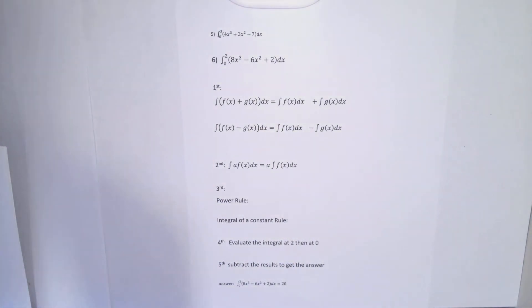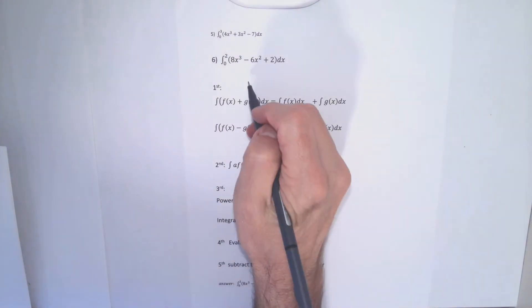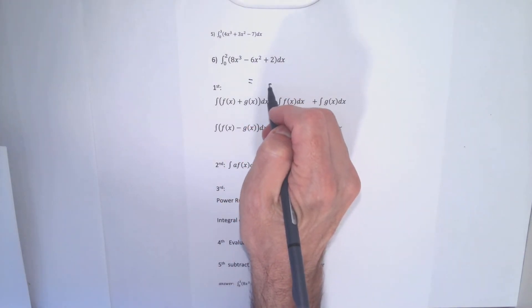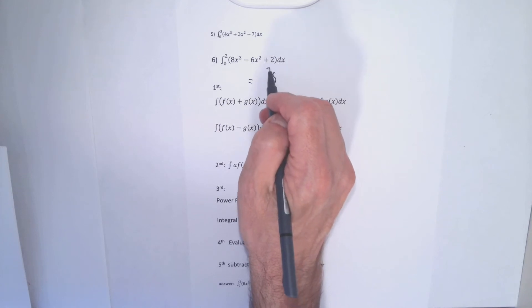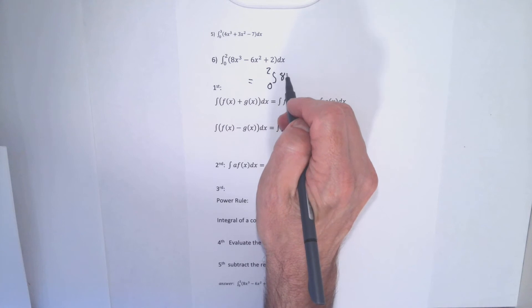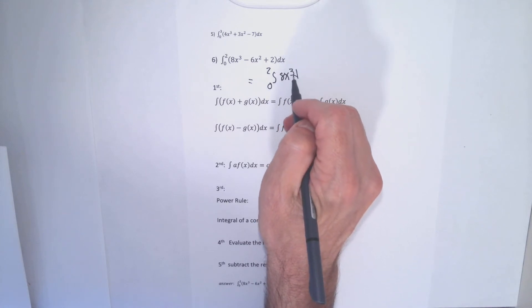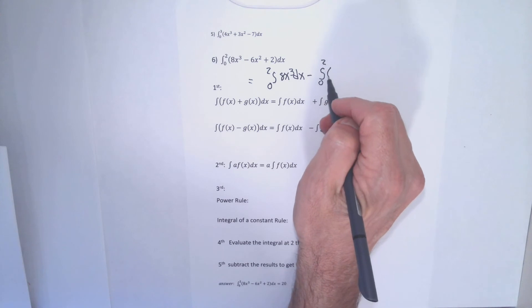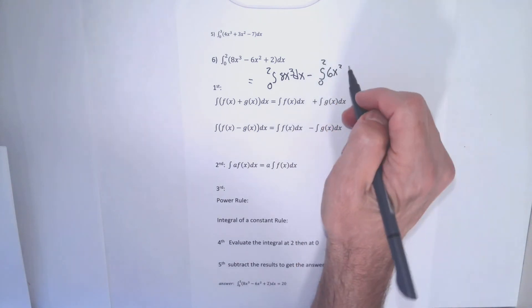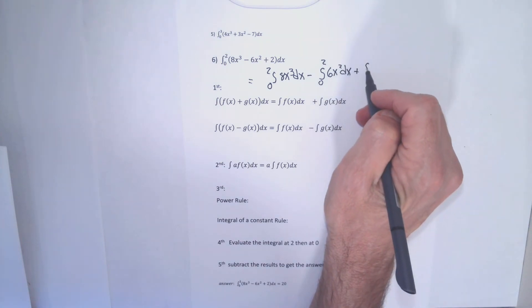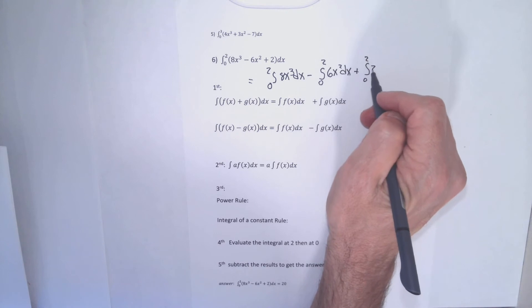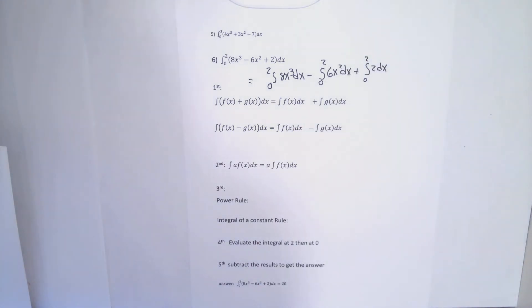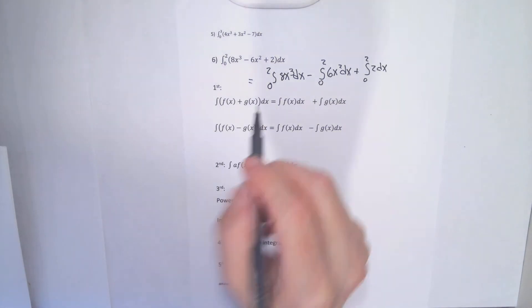I'll move on to problem six. It's a polynomial, and I need to separate polynomials into multiple integrals, then pull the coefficients out front before integrating. In problem six, I'm going to rewrite this as three integrals. The proper way to do it is to write the zero and two in the definite integral symbol each time. Separated into three integrals, now I'll pull my coefficients out front.